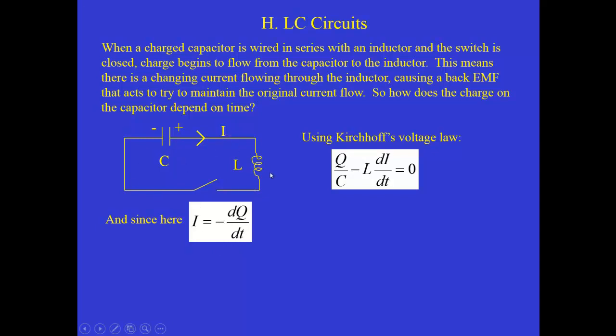So we have to put that minus sign in here in order that the current I is a positive quantity. Because whenever we write down I in Kirchhoff's voltage law, we always assume it's positive. So that means that this equation here becomes Q over C, and now we substitute in I equals negative dQ/dt and take the derivative again. So we get, the two minus signs cancel, and we get L d²Q/dt².